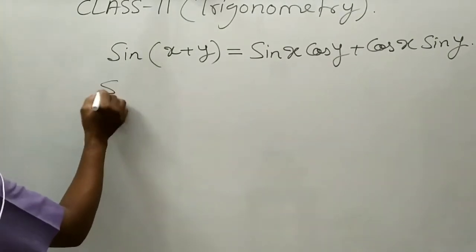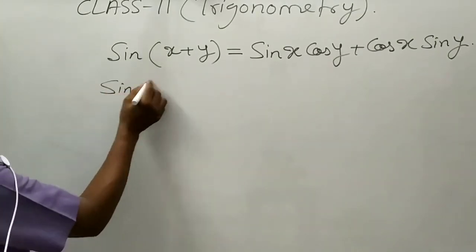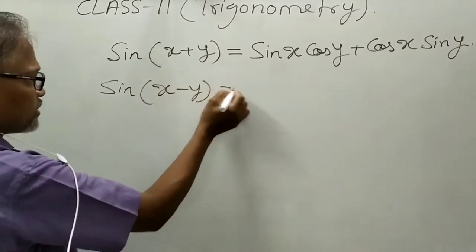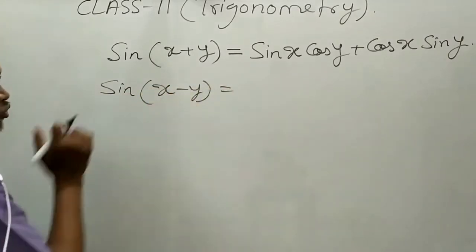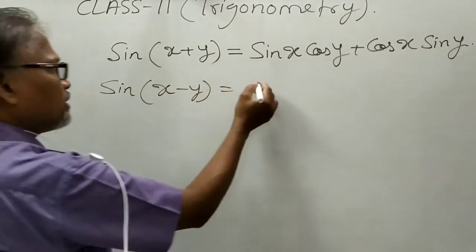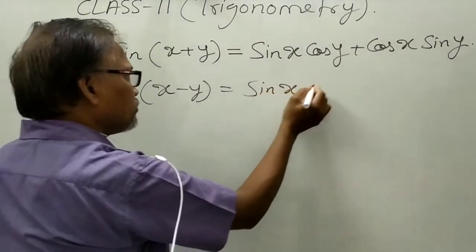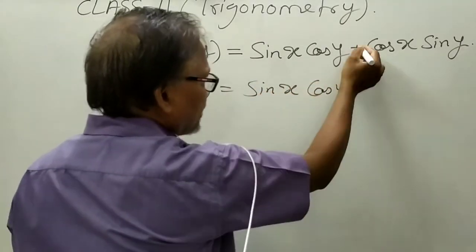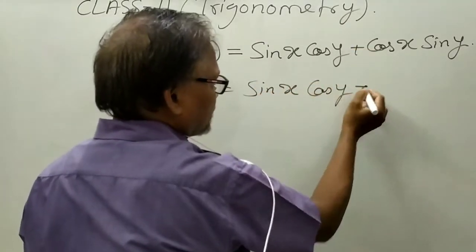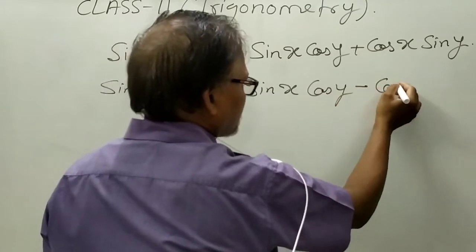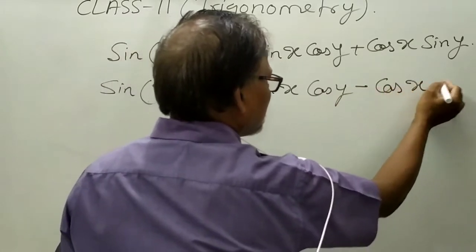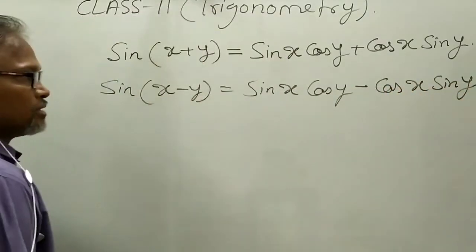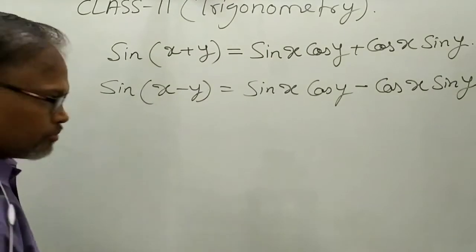Similarly, if you have sin(x − y) — the difference of two angles — then you just take minus in place of plus, giving sin x cos y minus cos x sin y. This is the second formula.